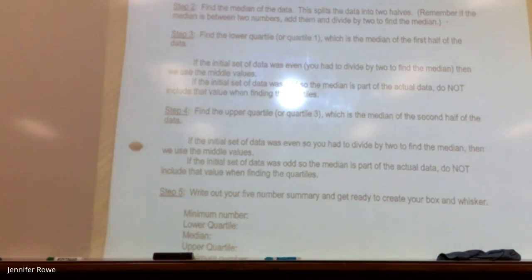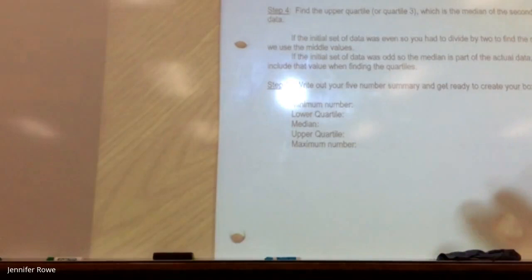Find the upper quartile or quartile three, which is the median of the second half of data. Again, same thing. Write out your five number summary. Okay. This is important. There are five things that you're looking for in the box and whisker plot that are going to help you create it. First thing you need is the minimum value that you get just from stringing your numbers in order. Then you get your lower quartile. That's the median of the first half of data. Then you have your median. Then you have your upper quartile, which is the median of your second half of data. And then your maximum number, which, again, you get a little straight from there. So it's basically just finding a bunch of medians.